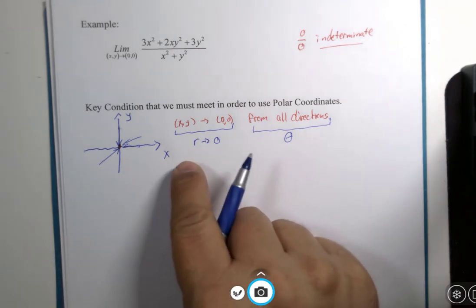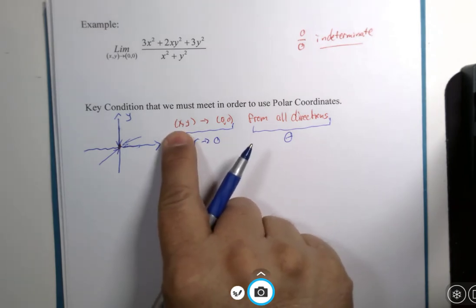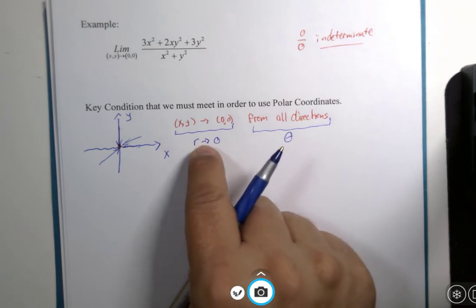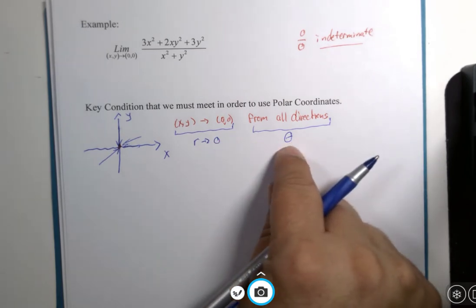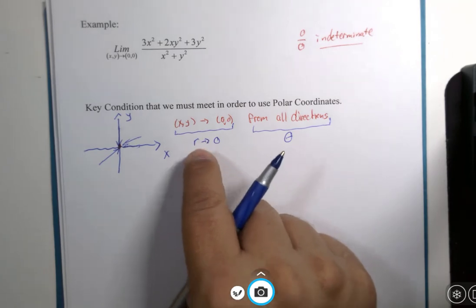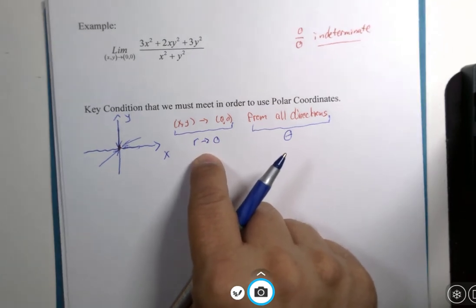And my students and my visitors, please note, this is two variables both approaching zero. This is one variable approaching zero. We're going to turn this limit into a single variable limit. With another symbol floating along, but the limit will be involving r and r only.